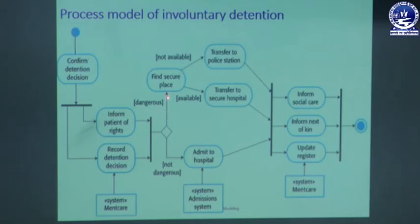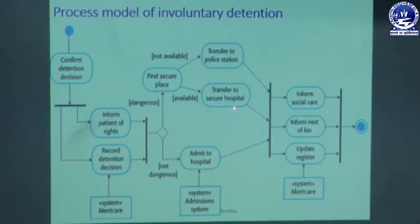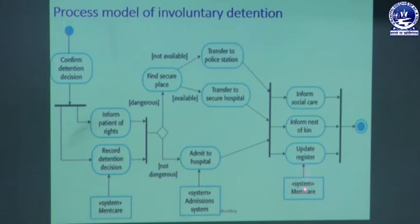If the patient is dangerous, we find a secure place. If that secure place is available, we can transport the patient — it may be to the hospital, a secure place, or a police station. Whatever action is taken, lastly we have to inform social care, inform the family member, and then update the register in the main care system. This is the process model of involuntary detention.